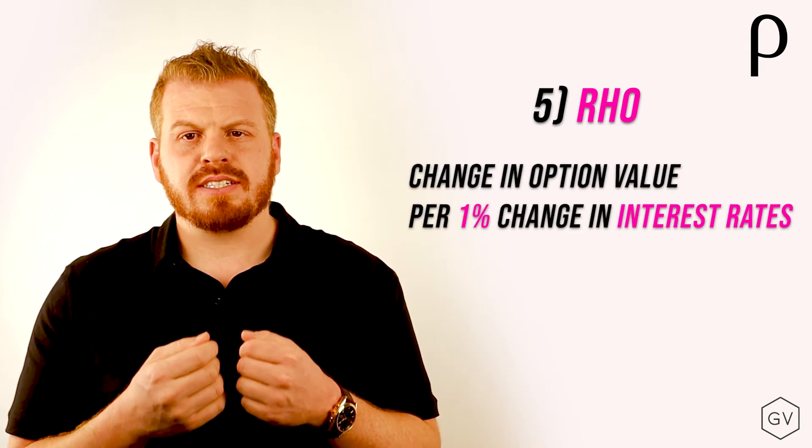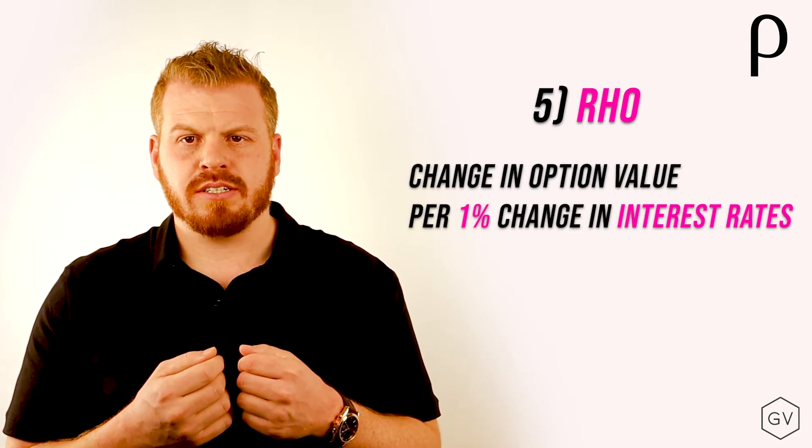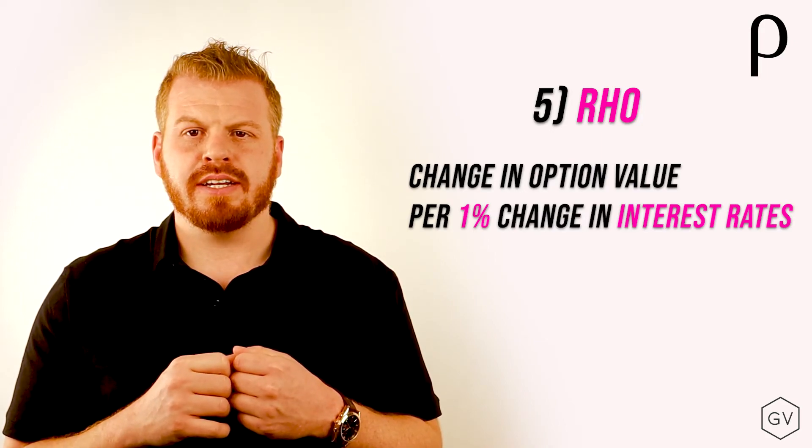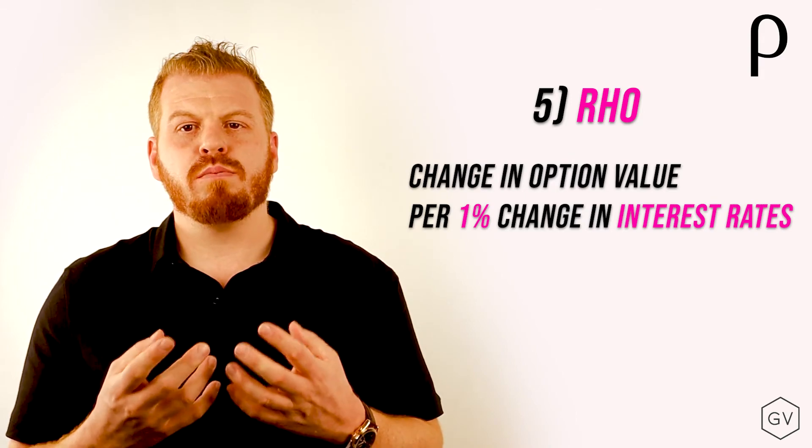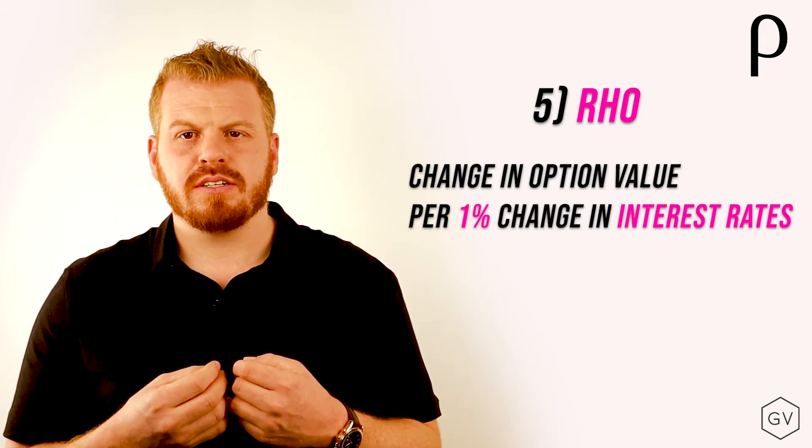The fifth Greek is called rho. Rho tells us the sensitivity of our option position to a one point change in interest rates, holding everything else constant. We'll talk more about interest rates and options in later videos.